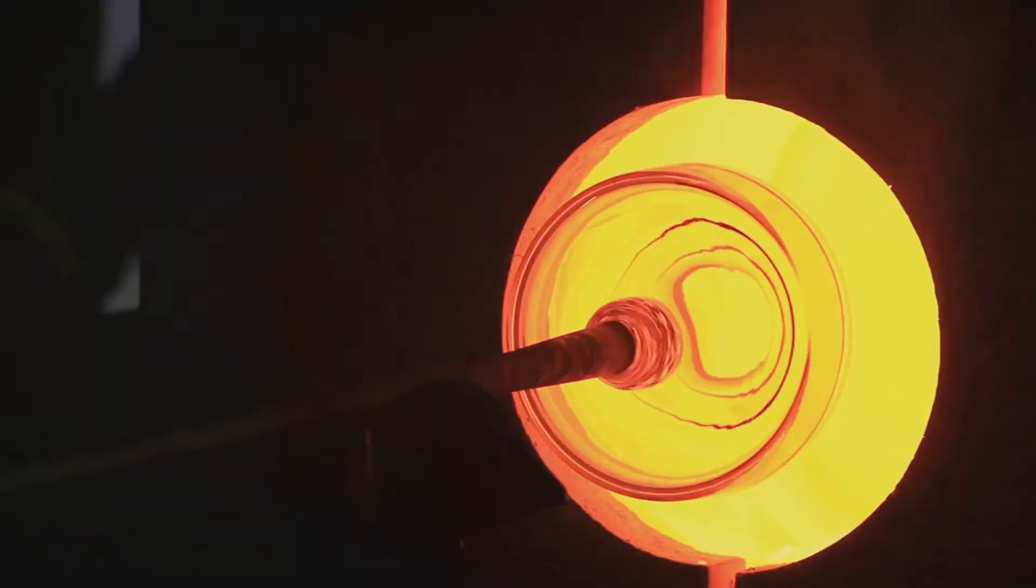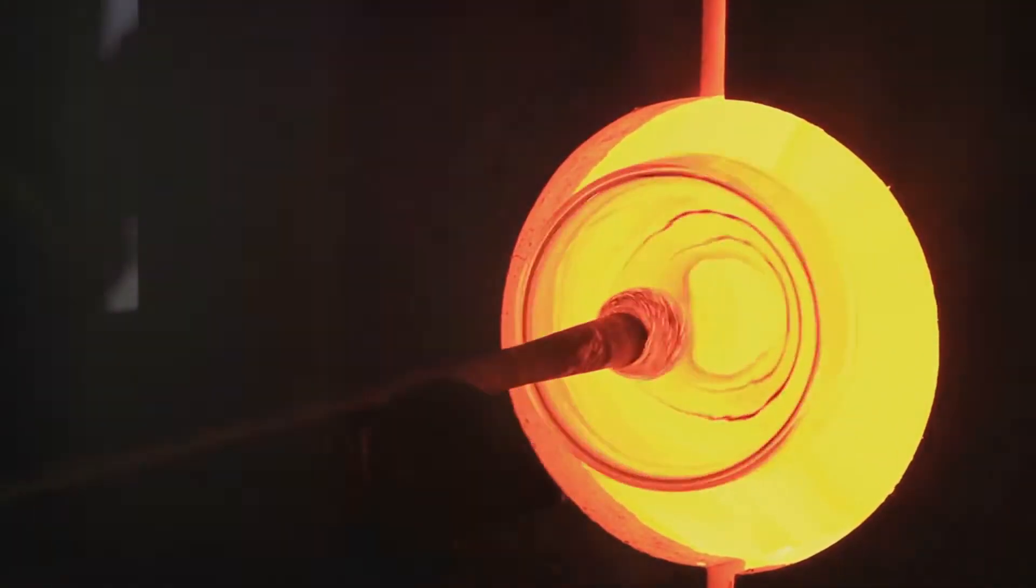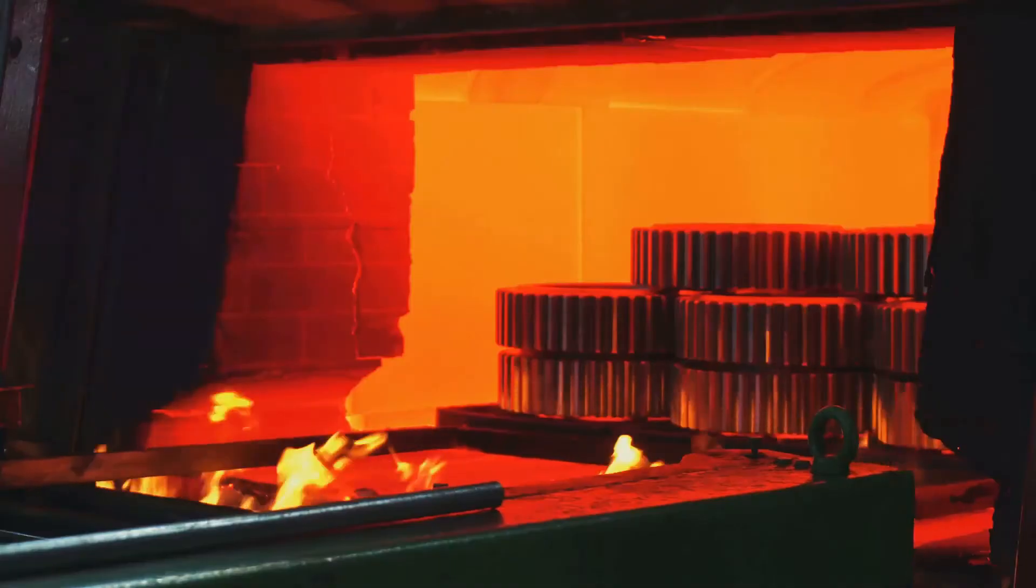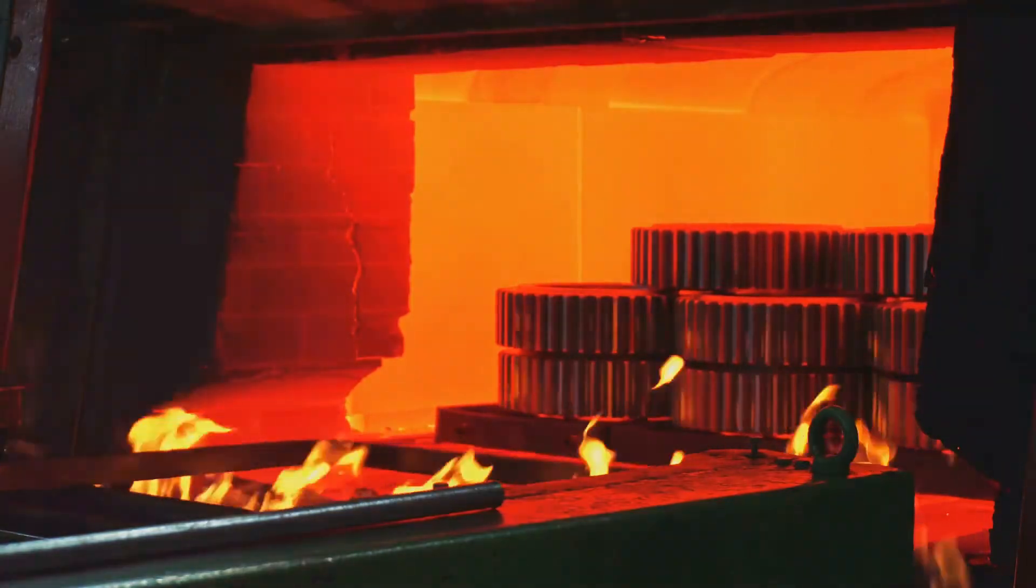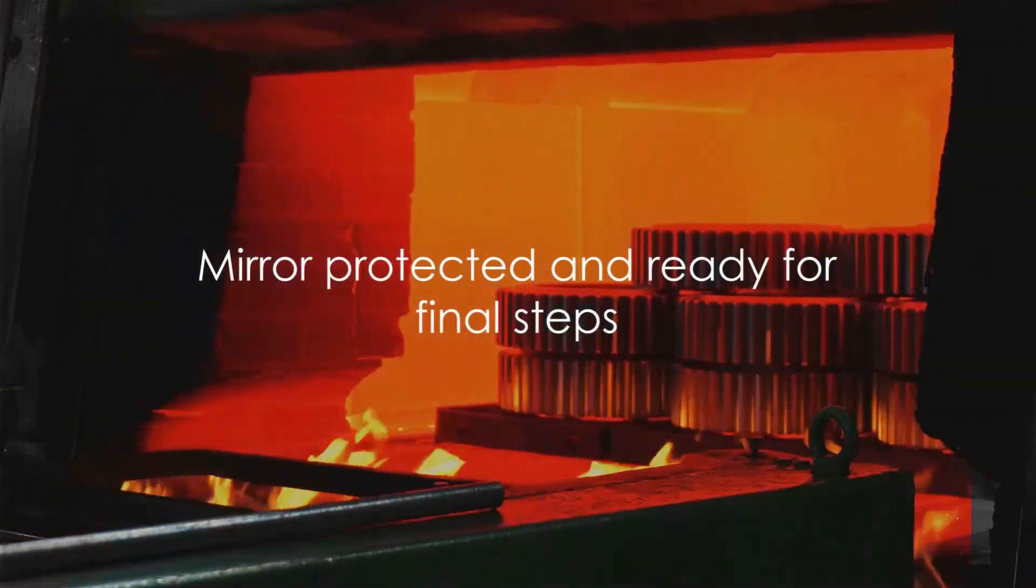Once dry, a second coat of paint, this time of a different color, is applied. The glass is then cured at a higher temperature, hardening the paint and creating a robust protective shell. With our mirror protected, it's time for the final steps.